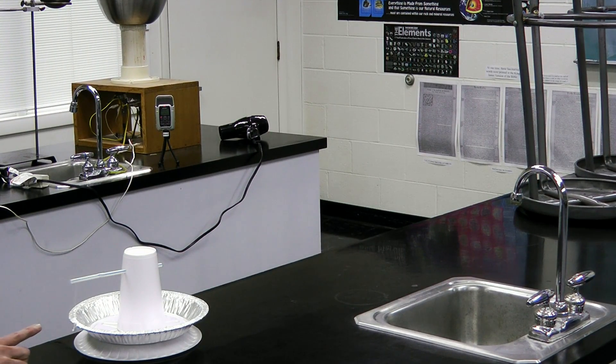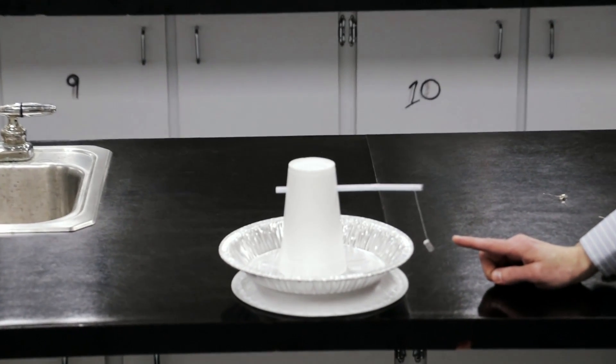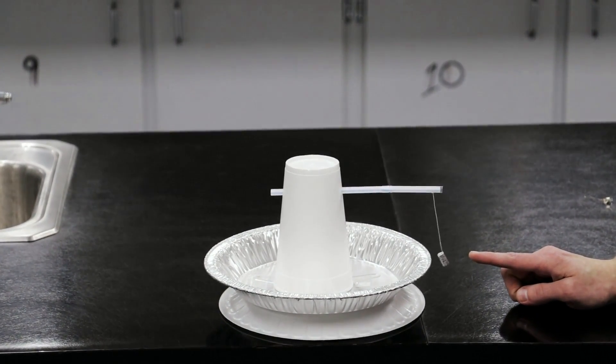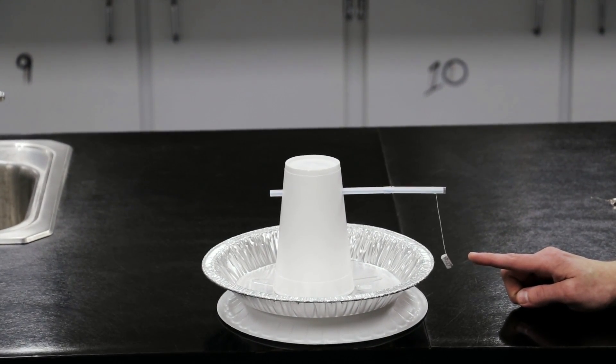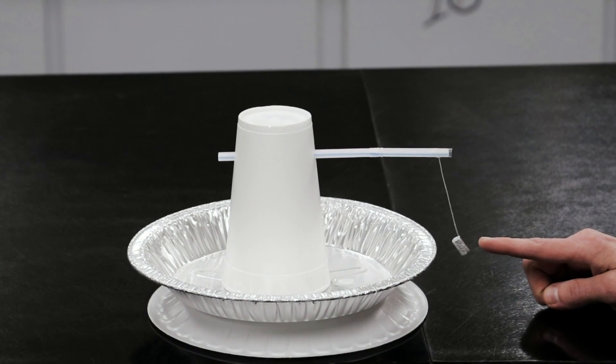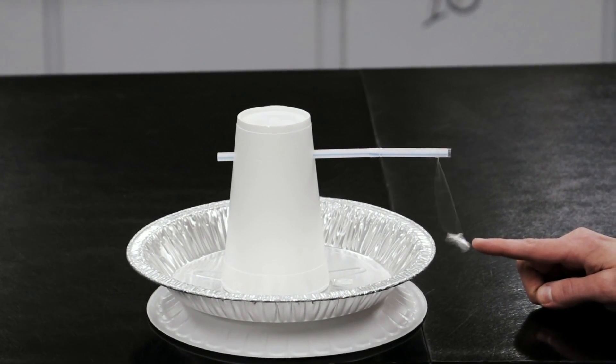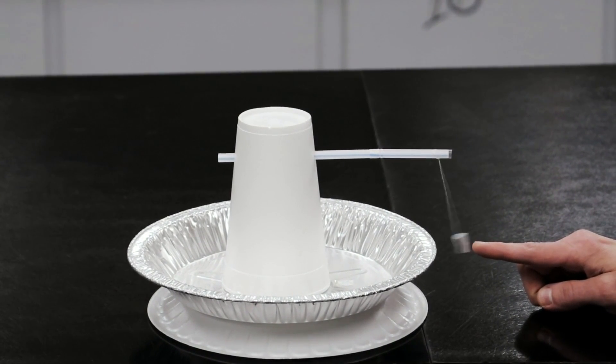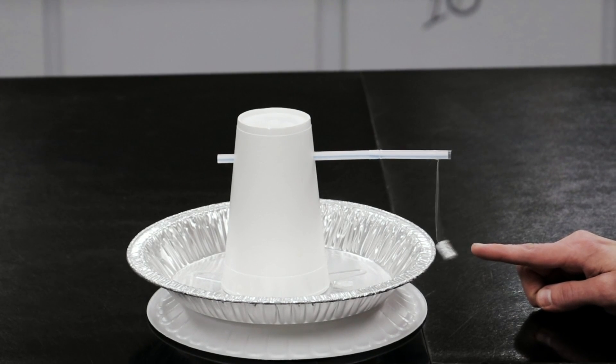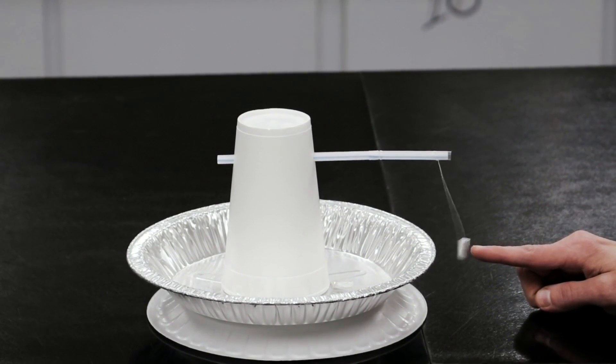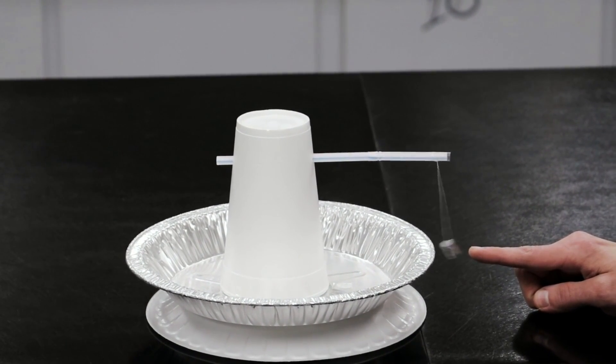Now if I very carefully bring my finger close to this conductor, it will be attracted to my finger. Look at it being attracted to my finger there. When it hits my finger, it loses its charge, and it falls back against the plate, gets more charge, and then comes back against my finger.